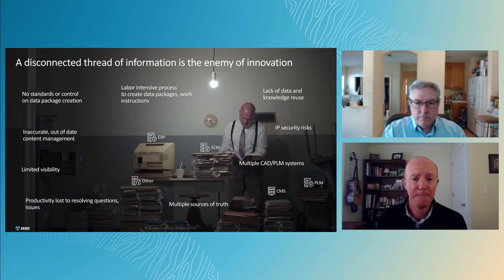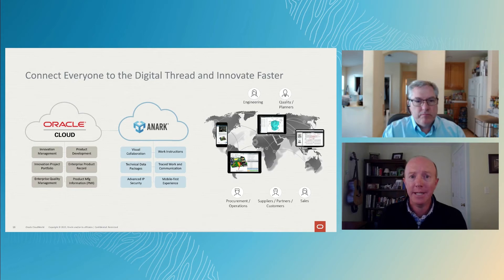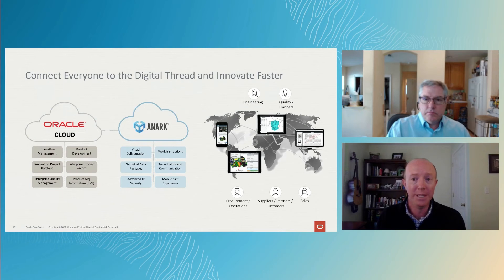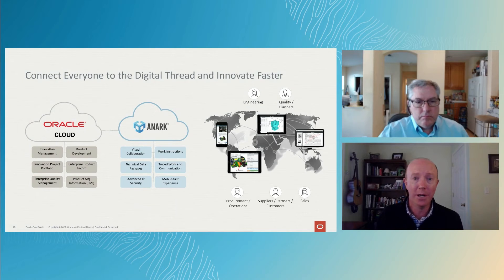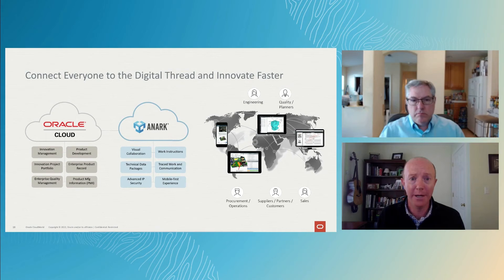What we want to be able to do is connect everyone to this digital thread and innovate faster. The way we think about that with Oracle Cloud together with Anarch is: if we can connect not only the data of that digital thread — including the 3D — but also the people to that data and to each other, then we've succeeded. You need to bring technical data packages, work instructions, visual collaboration, and other information into the context of the product definition, rather than removing it from the digital thread and sharing it via email. That ad hoc file sharing is what needs to be replaced, and bringing together Oracle Cloud with Anarch is exactly what we can do.